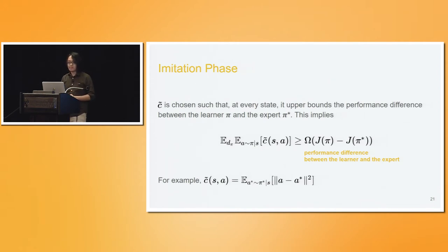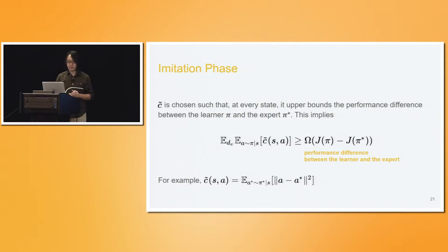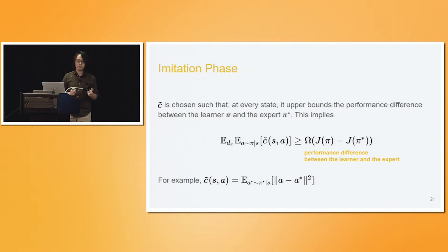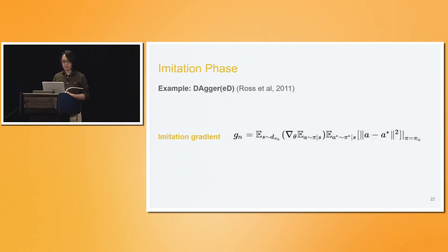How do we choose delta-C? To define the imitation gradient, delta-C must be chosen so that for every state, this new cost function upper bounds the performance difference between the learner and the expert. A common choice is to set delta-C to be the squared loss between the learner's action and the expert's action. This means that if you use delta-C as the instantaneous cost function for a new RL problem, the objective function of this new RL problem will upper bound the performance gap between the learner and the expert.